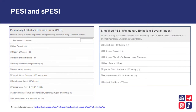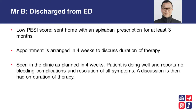The PESI score and the simplified PESI score are both available on the Thrombosis Canada website and app as tools to help physicians in the emergency department determine 30-day mortality risk with pulmonary embolism. Mr. B scored low on his PESI score and so was discharged home with a prescription for apixaban for at least three months. His appointment was arranged in four weeks to discuss duration of therapy with the physician in the clinic.